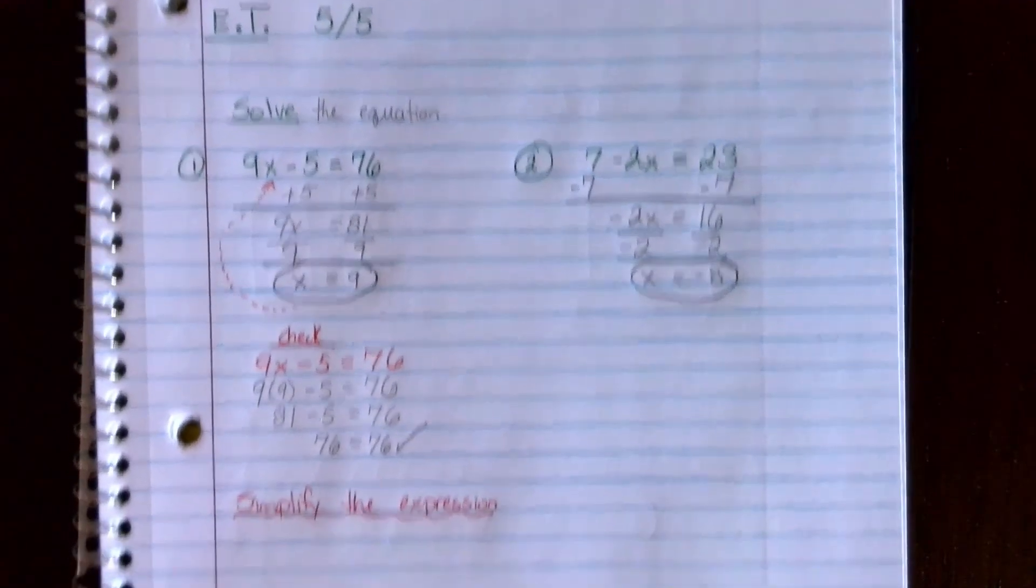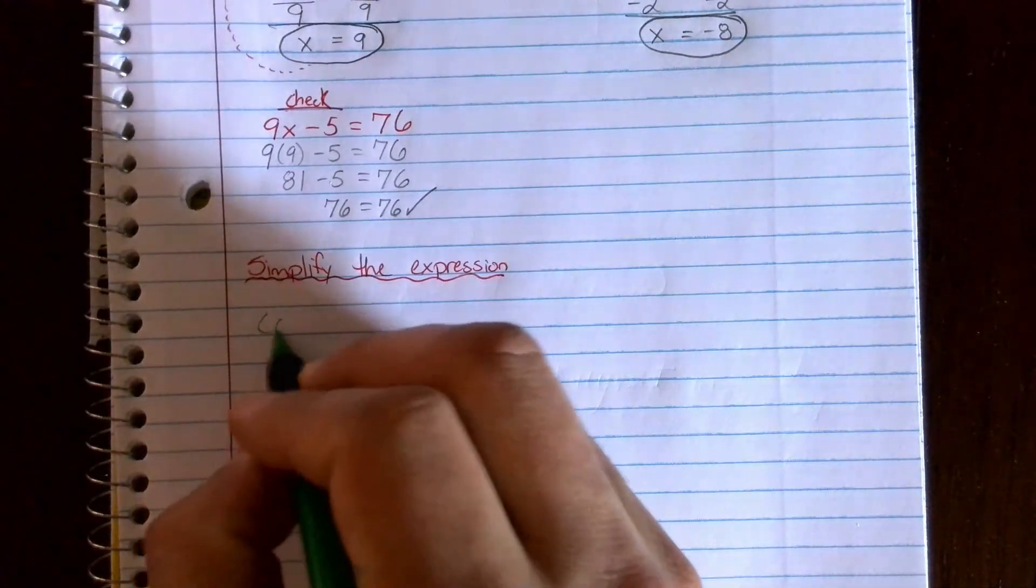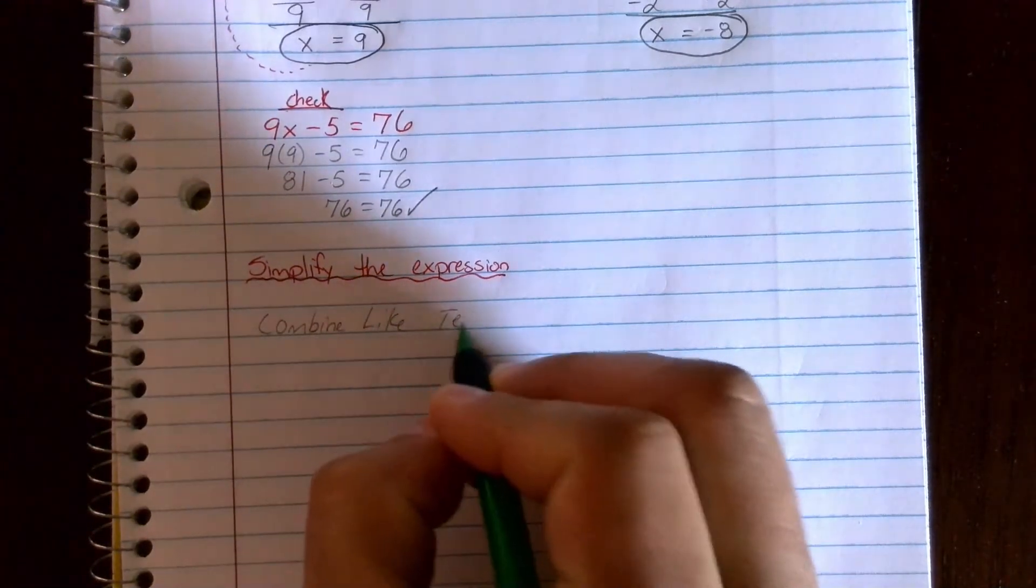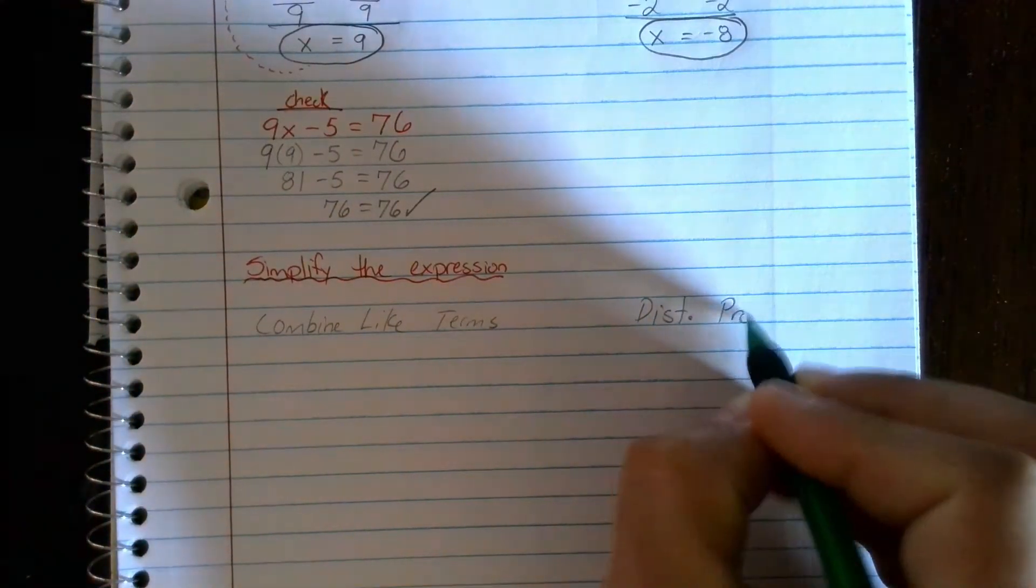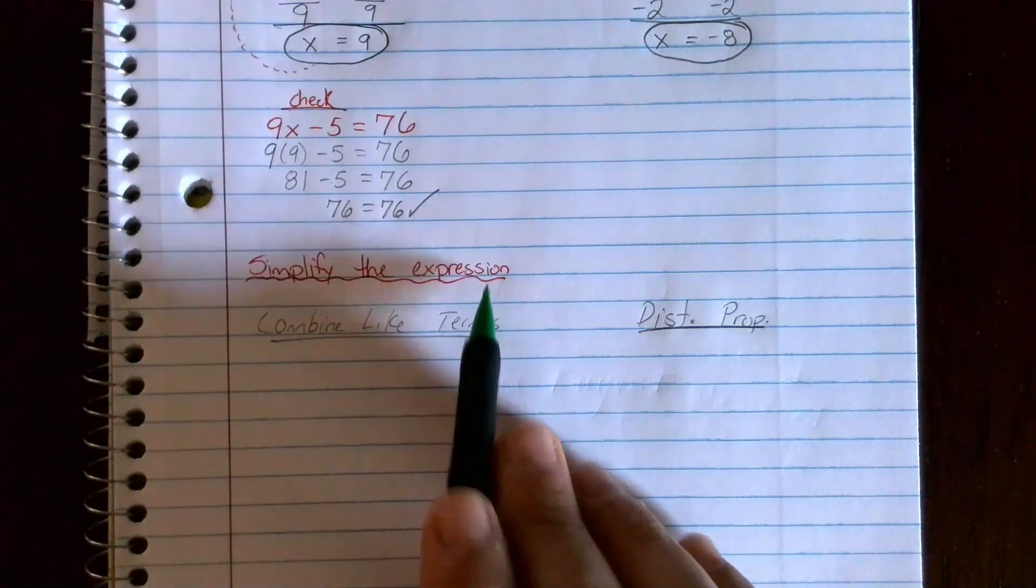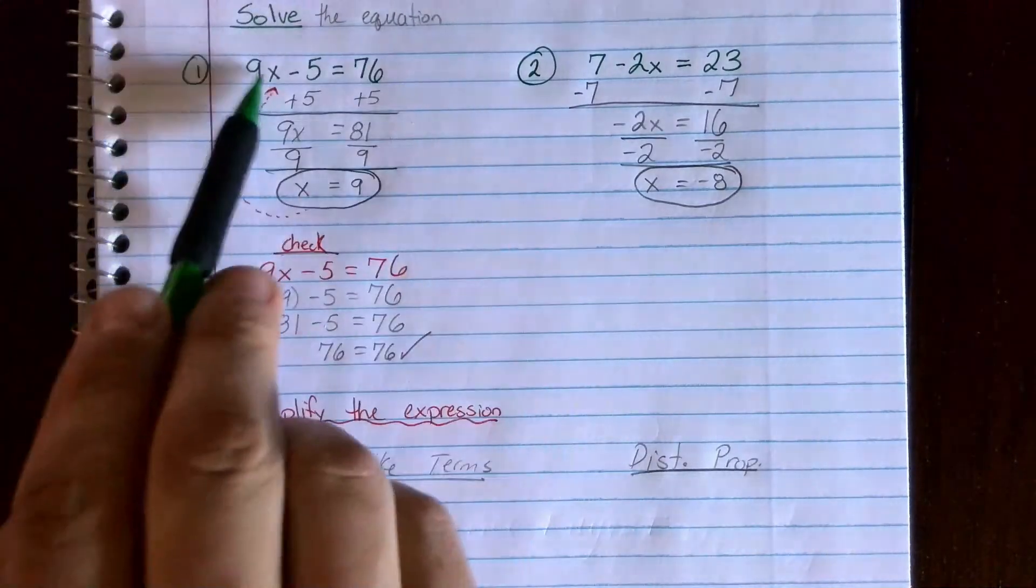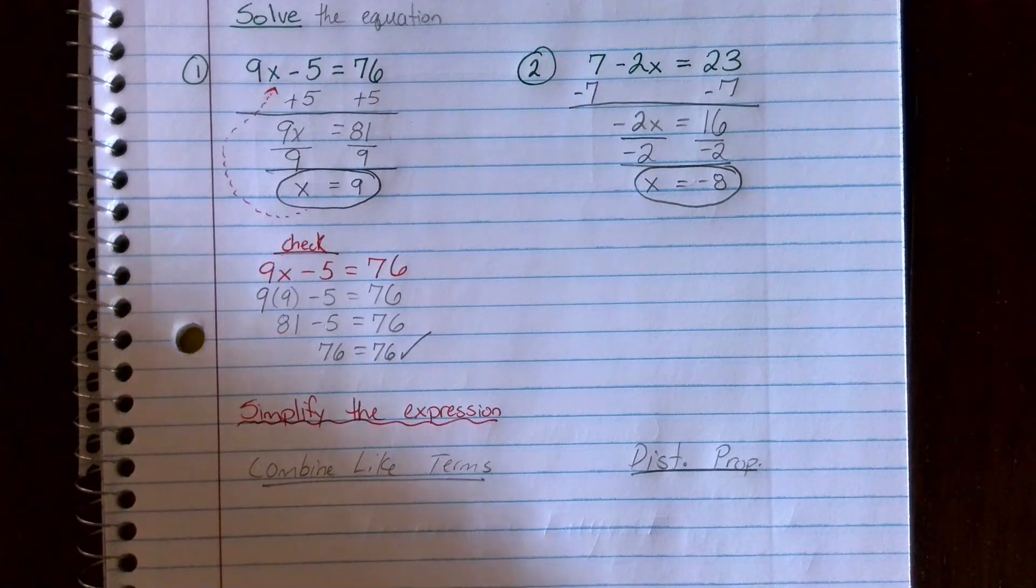All right, so that's your two entrance task problems. Let's go over two other things to keep in mind here. Simplify the expression, we're going to talk about stuff like this a little bit more. Remember there's two main ways we learned how to simplify an expression: combining like terms and the distributive property. Remember that we can simplify an expression, something without the equal sign, or just half of an equation. This is what we'll refer to when we get to the notes as working smarter not harder.